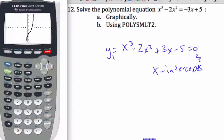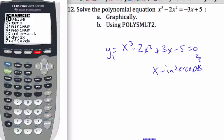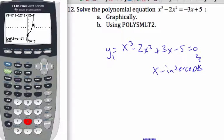I hit graph and I'm looking for this x intercept here. To do it, I can go second trace, which is my calculate menu, and I'm looking for what's called a zero, which is number two.